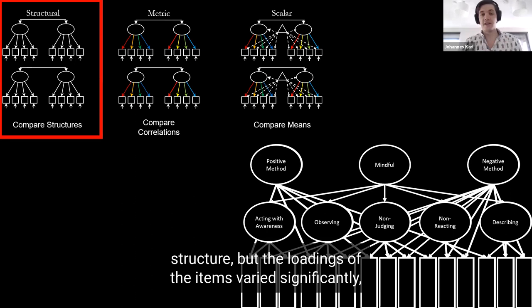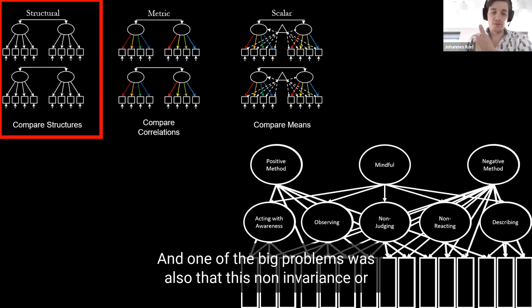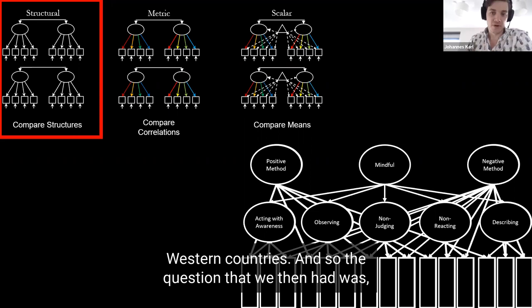This prevented us really from comparing correlations between those countries or comparing means. One of the big problems was also that this non-invariance or non-equivalence was systematically linked to culture level variables, with cultures higher on individualism and cultural looseness showing better performance, so more Western countries.